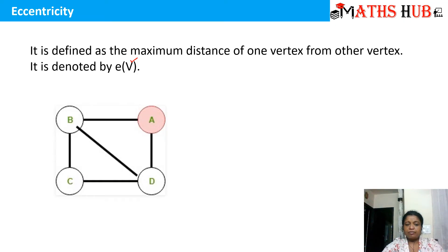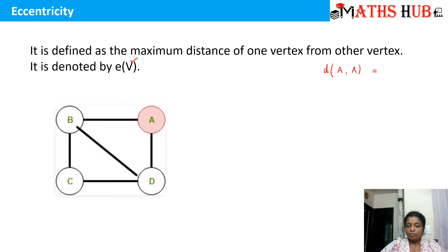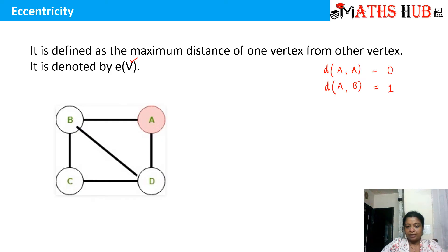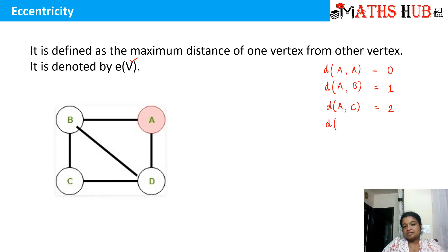Let's suppose this is our graph and we need to calculate the eccentricity of vertex A. The distance of vertex A from vertex A is 0, since there is no loop. The distance between A and B is 1. The distance between A and C — the shortest path is A to D, D to C — so the length is 2. There is no other path shorter than 2. Similarly, the distance between A and D is 1.